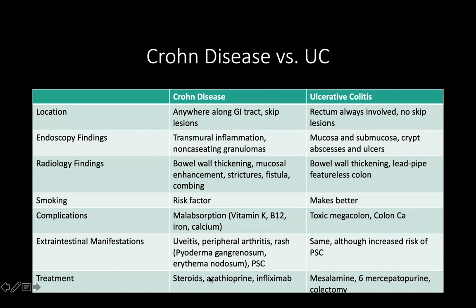For treatment during acute exacerbation, steroids are typically used. Azathioprine and infliximab are used for Crohn's disease, while mesalamine and 6-mercaptopurine are used in UC. Colectomy can sometimes be curative in UC, but is often not useful for Crohn's disease, where recurrence at the pre-anastomotic site is common. Surgery is much more effective in UC versus Crohn's disease.